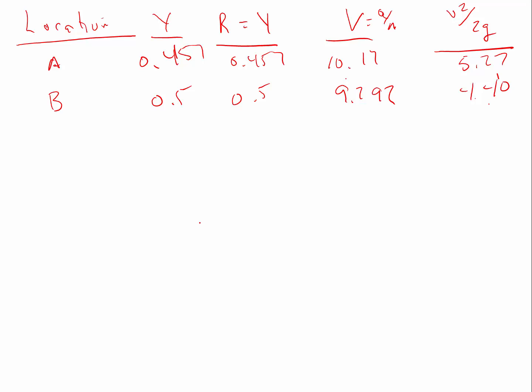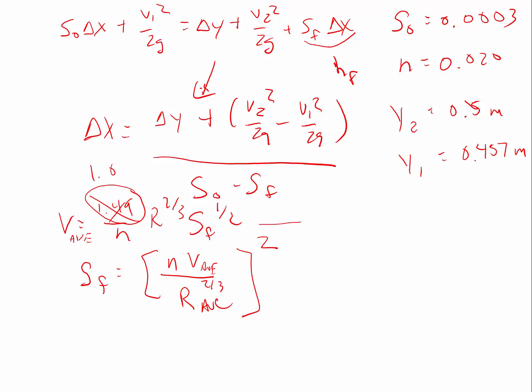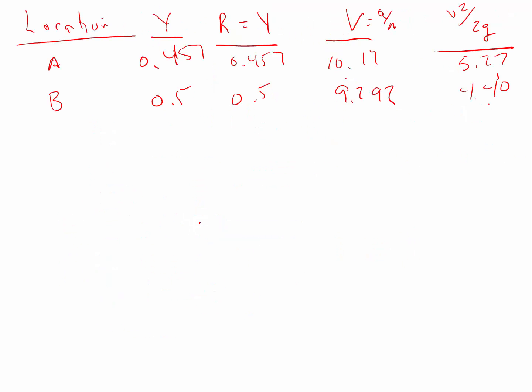So if I look, and remember I'm trying to solve for this value of s sub f here, I'm going to plug in things there that I've got. So I've got 0.020, and I've got the velocity average. Well, the velocity average will be the average of these two right here. So if I looked at the v average, that's going to be equal to 9.73. And if I looked at the r average, the average hydraulic radius, that's going to be 0.479.